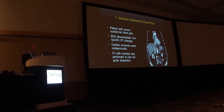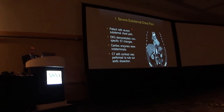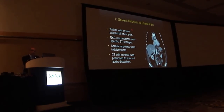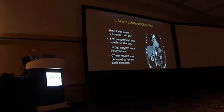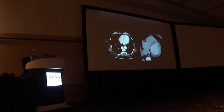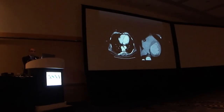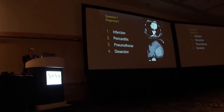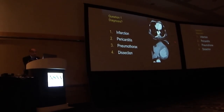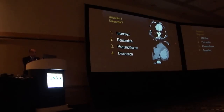First patient presented with severe substernal chest pain. ECG demonstrated non-specific ST changes, cardiac enzymes were indeterminate, and CT with contrast was performed to rule out aortic dissection. You can see CT of the chest, abdomen and pelvis. Your choices are: infarction, pericarditis, pneumothorax, or aortic dissection.